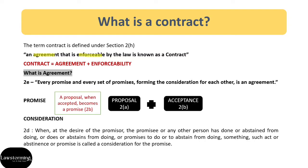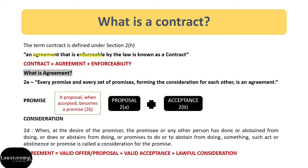Consideration is defined under Section 2D. It says that when at the desire of the promisor, the promisee or any other person has done or abstained from doing, or does or abstains from doing, or promises to do or abstain from doing something, then such act or abstinence or promise is called a consideration for the promise. We will deal with consideration at length separately. But for now, we can define agreement as valid offer or proposal plus valid acceptance plus lawful consideration.